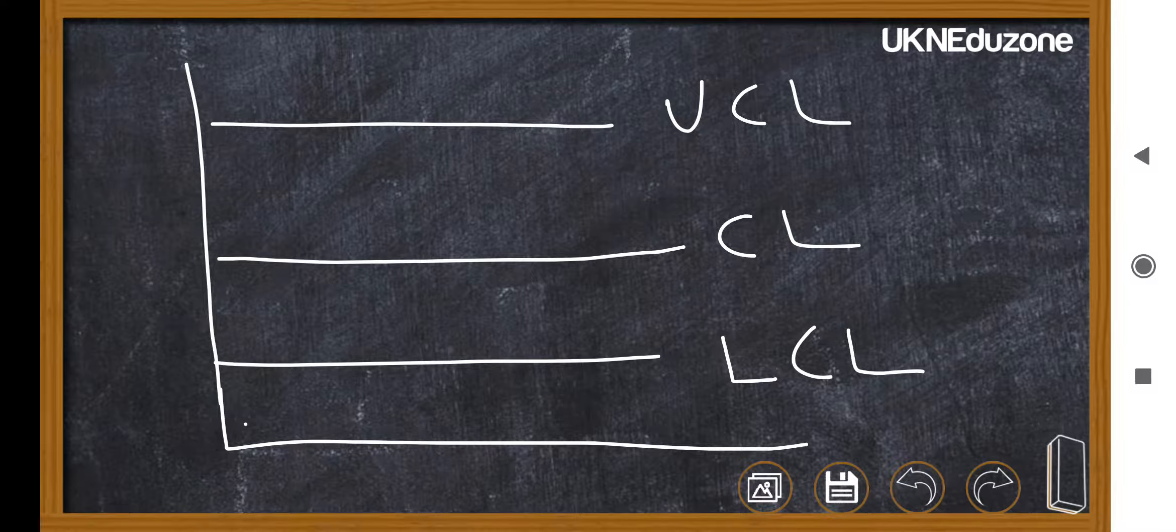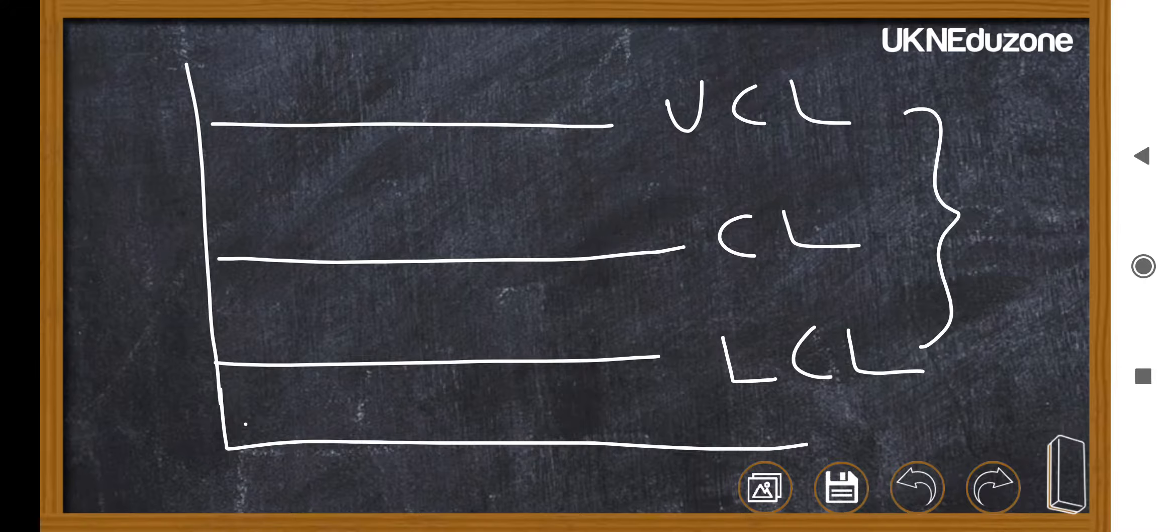Then if we get the point or the point falls in between the upper control limit and the lower control limit, then it is a state of statistical control or the variation is attributable.